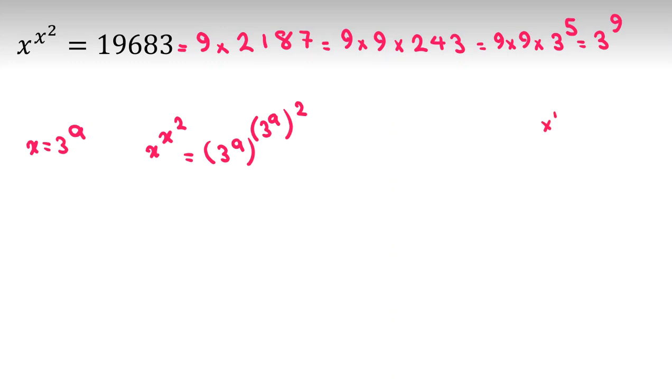Using the power rule, x to the m to the n equals x to the mn. Applying it here, we get 3 to the a raised to the power of 3 to the 2a.